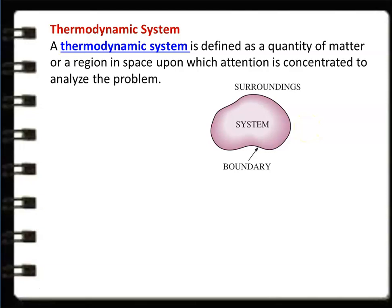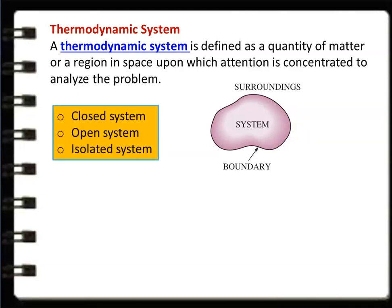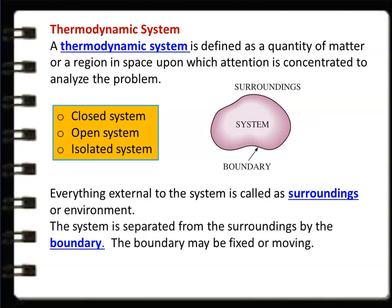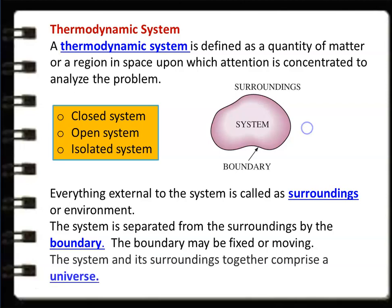The system is within the boundary. We have a boundary line and outside it we have the surrounding. Everything external to the system is called the surrounding or environment. The system is separated from the surroundings by means of a boundary, which may be fixed or moving. The system and the surroundings together comprise the universe. There are three types of systems: closed system, open system, and isolated system.